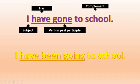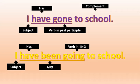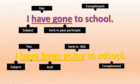For present perfect continuous, the structure is: subject + 'have' or 'has' + auxiliary 'been' + the verb in -ing + complement. For example: 'I have been going to school' or 'She has been going to school.' Don't forget: 'has' for third person, 'have' for first person.